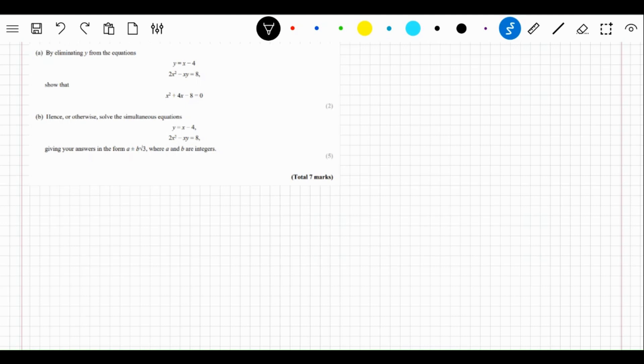For this question, it says by eliminating y from the equations, show that x squared plus 4x minus 8 equals 0. That is part a, so we're going to solve that one first.